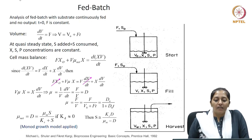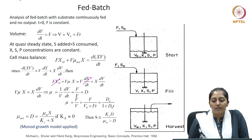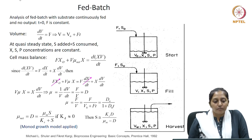Now let us see how to design a simple fed batch process. Here we will assume, as seen in the schematic on the slide, that this fed batch process is a constant feed flow rate process — meaning there is a flow rate F of the inlet feed going inside the reactor and it is constant, with no change in the flow rate with time.